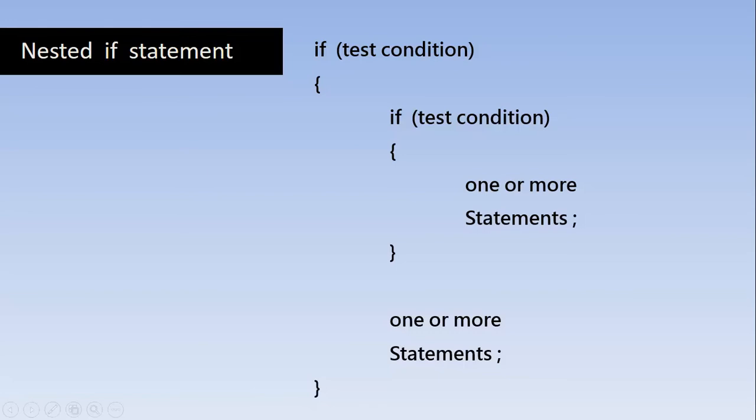For nested if-else, it is the same as nested if, but here we are nesting both if and else inside the outer if. A complete if-else structure is placed inside another if structure. So this inner if or else will be executed only when the outer condition is true. This is an if-else structure containing another if inside it.